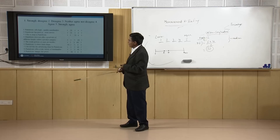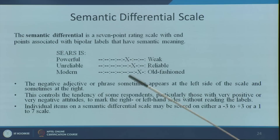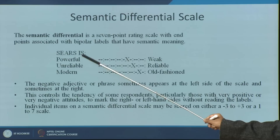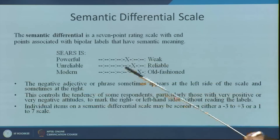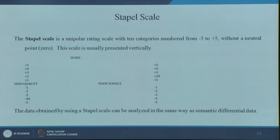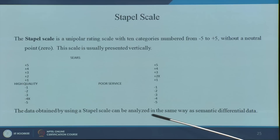The semantic differential scale has two bipolar adjectives — for example, powerful versus weak. It is suggested to keep the negative or lower value on the left and the positive or higher value on the right, because the human mind tends to have a progressive attitude. There are 7 points in between — 1 through 7. The staple scale uses plus 5 to minus 5 on a particular variable like service or quality and respondents give a score, though nowadays it is seldom used.